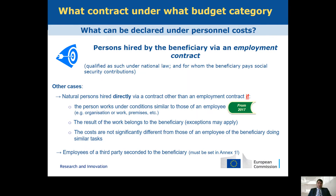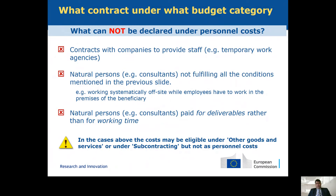What you cannot claim: if some of these conditions are not fulfilled, it's not personal cost — it becomes other goods and services or subcontracting. You may have issues with hourly rates, where people are working, conditions not being similar, or the contract being with a company rather than a natural person. Also, if they were very independent — more like a subcontractor paid for deliverables rather than working time — again it's not personal cost but falls under the other two cost categories.